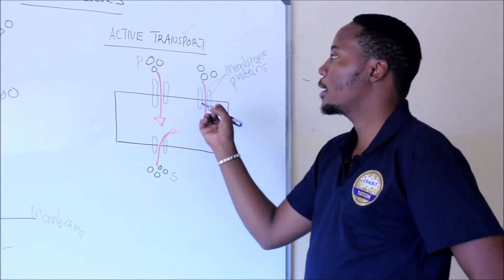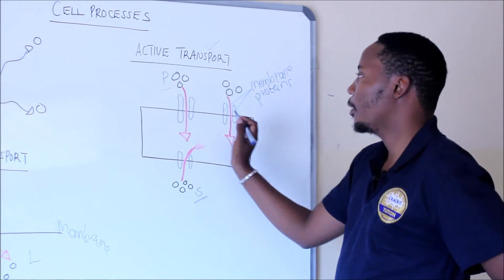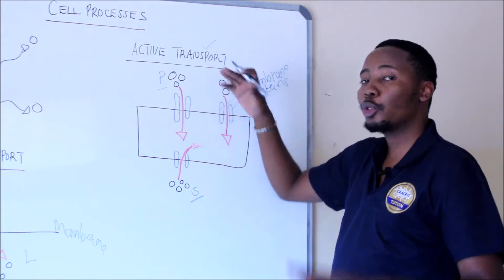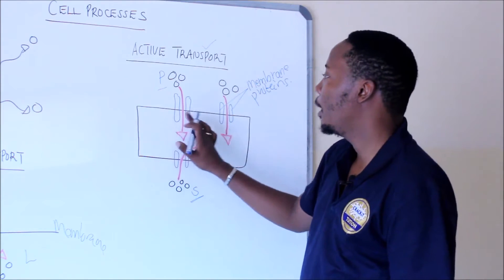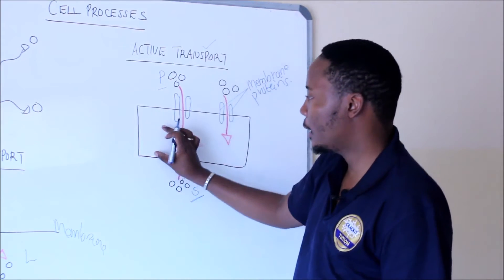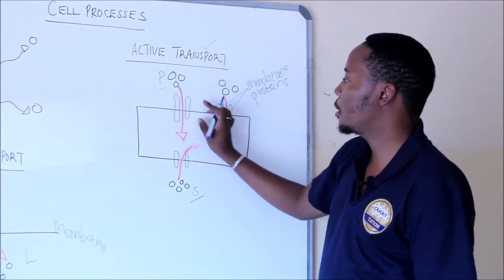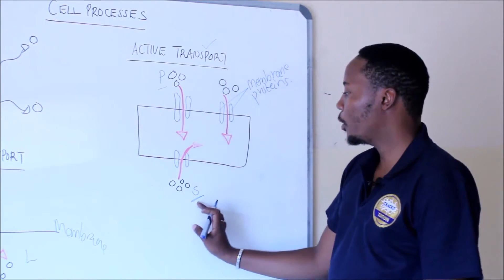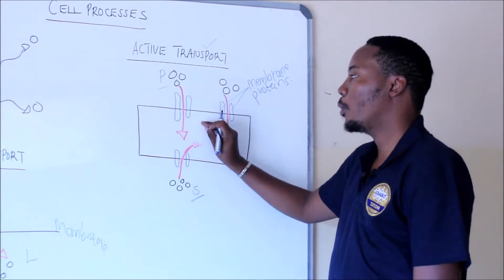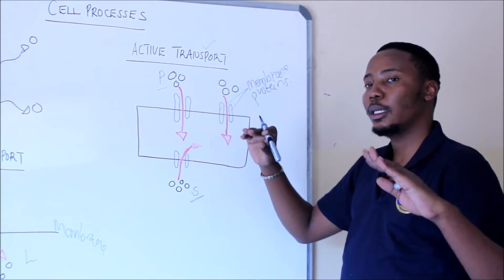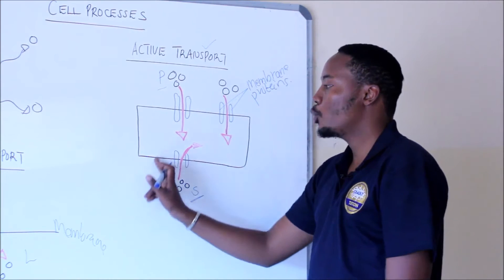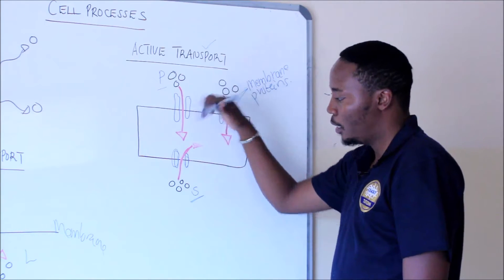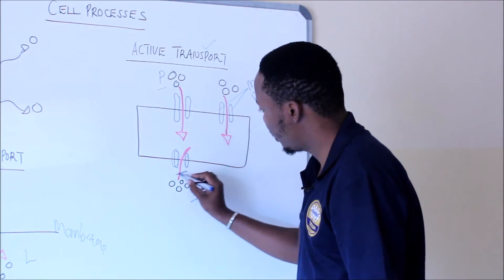Let's take an example — potassium and sodium. Potassium always has to be high inside the cell and low outside the cell. Because of those concentrations, potassium will leak outside the cell, but still the concentration needs to be high inside and low outside. So we are going to have these proteins pushing that potassium back into the cell where it belongs. Sodium, on the other hand, has to be high outside the cell and low inside, and because of those concentrations sodium will leak into the cell.